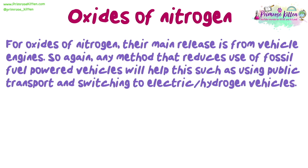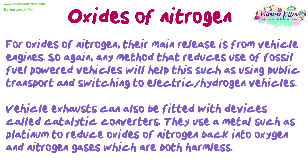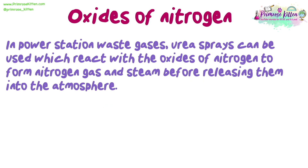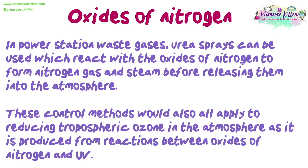For oxides of nitrogen, their main release is from vehicle engines, so any method reducing fossil fuel-powered vehicle use will help — such as using public transport or switching to electric or hydrogen vehicles. Vehicle exhausts can be fitted with catalytic converters, which use a metal such as platinum to reduce oxides of nitrogen back into harmless oxygen and nitrogen gases. In power station waste gases, urea sprays can be used, reacting with oxides of nitrogen to form nitrogen gas and steam. These methods also apply to reducing tropospheric ozone, as it is produced from reactions between oxides of nitrogen and UV.